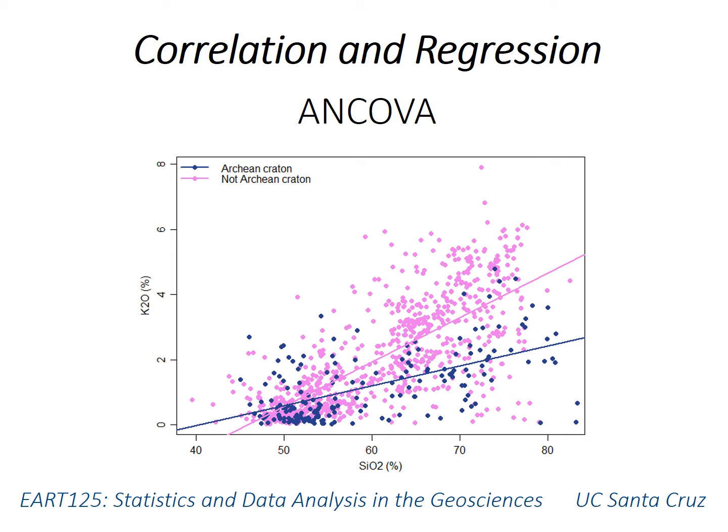For example, in this graph here, does the relationship between K2O and SiO2 differ between rocks from Archean cratons in blue or rocks from non-Archean cratons in pink? As you may notice, many of the regression assumptions are violated by this example, but that's not really pertinent right now.